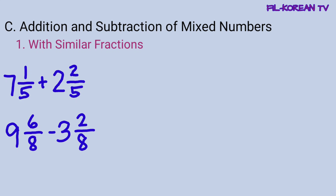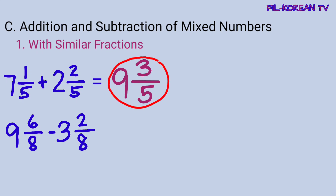Let's add 7 and 1-fifth plus 2 and 2-fifths. I-plus lang natin yung whole numbers. 7 plus 2 equals 9. I-plus din natin yung numerators. 1 plus 2 equals 3. Kopyahin natin yung common denominator na 5. The answer is 9 and 3-fifths. The fraction is already in lowest term dahil yung numerator na 3 at denominator na 5 ay parehong prime numbers. So, eto na yung final answer.